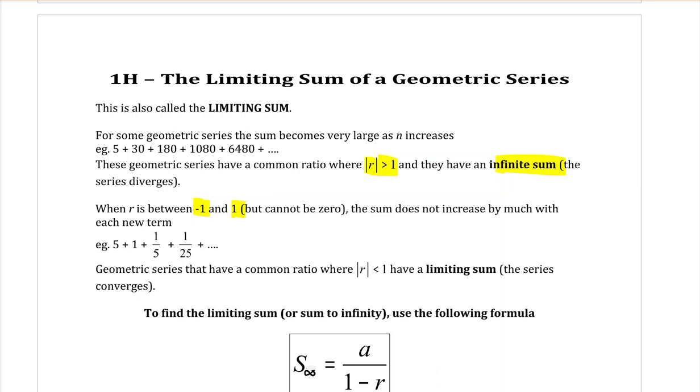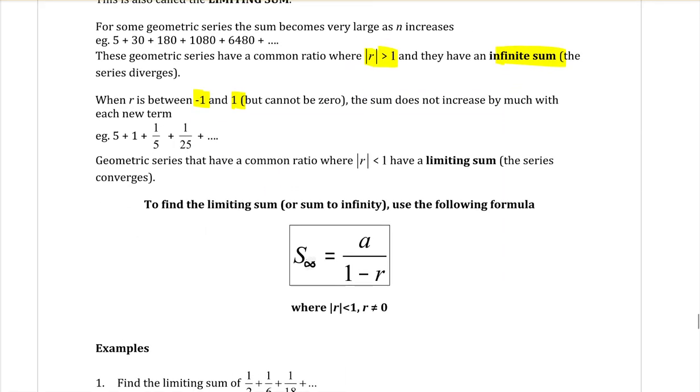So when the terms, like in this one, we're multiplying by one-fifth. So the formula that we're going to be using, it looks so nice and simple. S to infinity, the sum of infinity terms, the limiting sum, is A over one minus R. That's all there is to it.